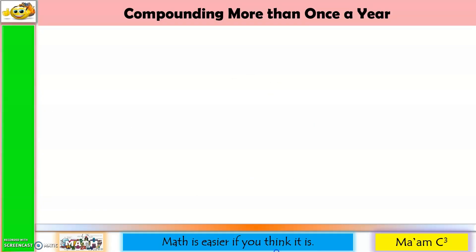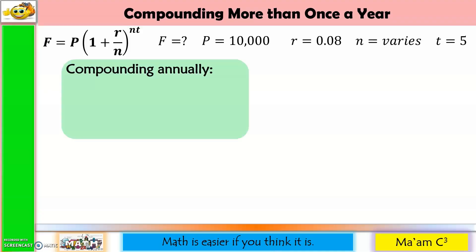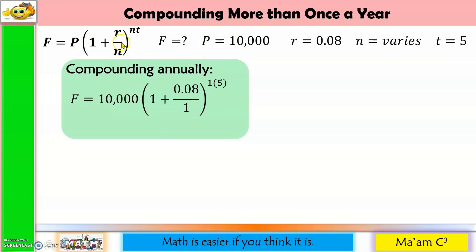Let us compare the effect of different compounding frequencies on the future amount. Starting with compounding annually: P is 10,000, rate is 0.08, N is 1, and T is 5. This gives us 14,693 pesos and 28 centavos.